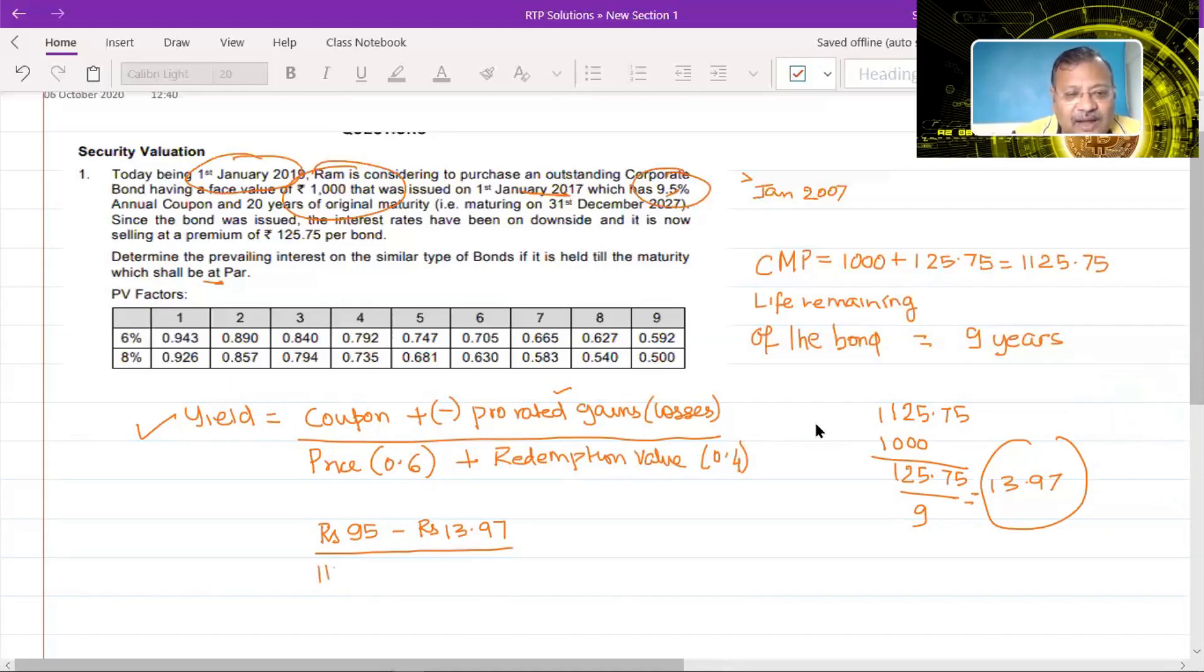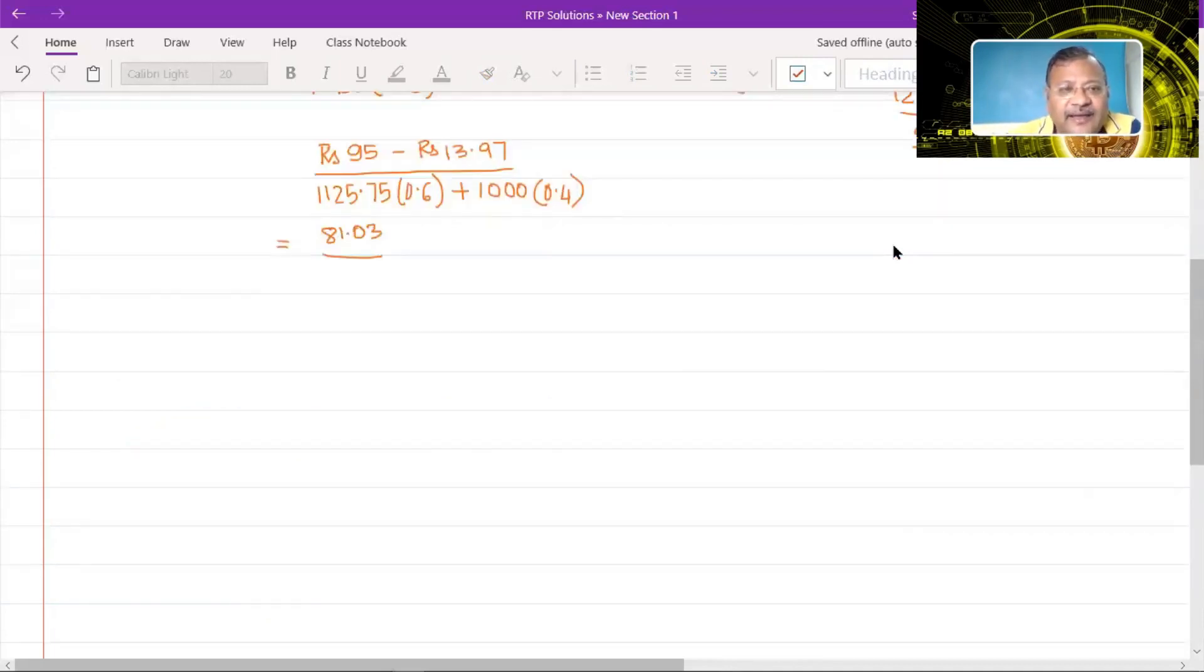Whole thing divided by price into 0.6. That is 1125.75 into 0.6 plus redemption value 1000 into 0.4. Now if we solve this, we'll get 95 minus 13.97 will give us 81.03. Whole thing divided by 1125.75 into 0.6, 675.45 plus 1000 into 0.4 will give us 400. That will be 81.03 upon 1075.45, 0.0753. That is 7.53%. This will be the yield.